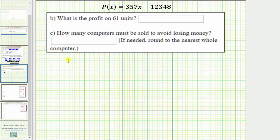So we need to find P(61) which equals 357 times 61 minus 12,348. Well, 357 times 61 is equal to 21,777 and we have minus 12,348. So P(61) is equal to this difference which is 9,429.